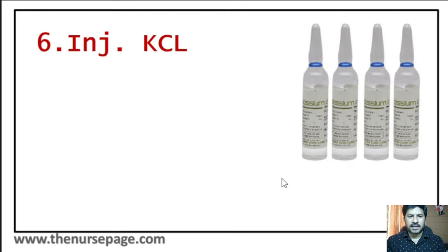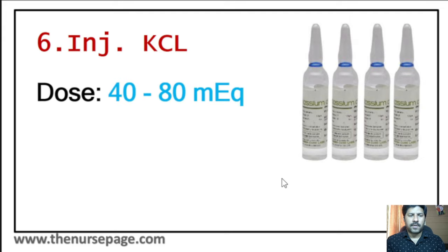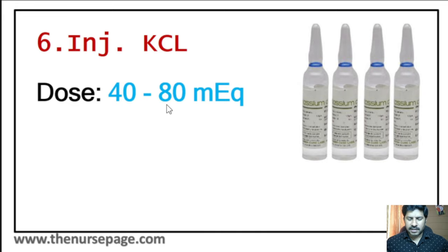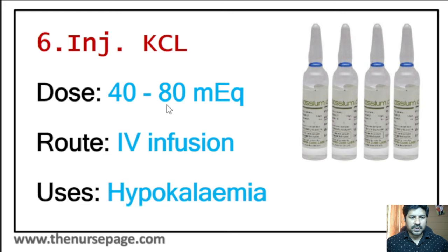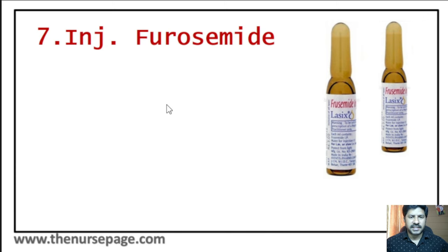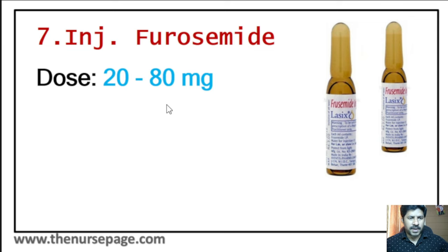Sixth injection is potassium chloride. Dose is 40 to 80 milli-equivalents; one ampoule of 10 ml solution contains 20 milli-equivalents. Route of administration is only through IV slow infusion — if administered as a fast bolus, the patient can die from cardiac arrhythmia. Main use is hypokalemia.